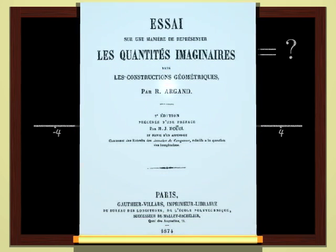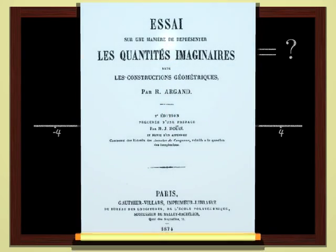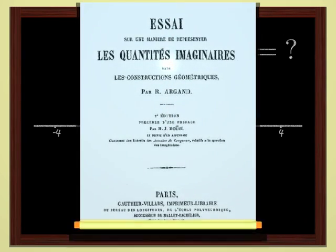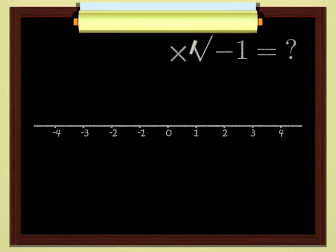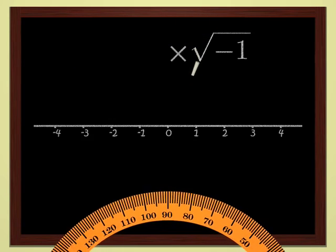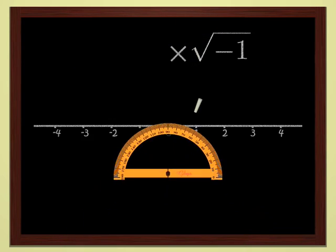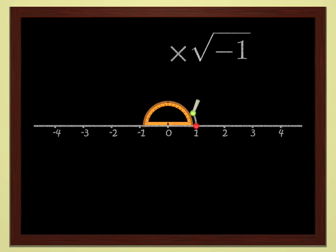At the beginning of the 19th century, Robert Argand had a really great idea. He said to himself, since multiplying by minus one is 180 degree rotation, its square root is a rotation by one half of 180 degrees, 90 degrees. If I do two quarter turns one after another, I end up doing a half turn. The square of a quarter turn is a half turn, hence minus one. It's easy when you know how.